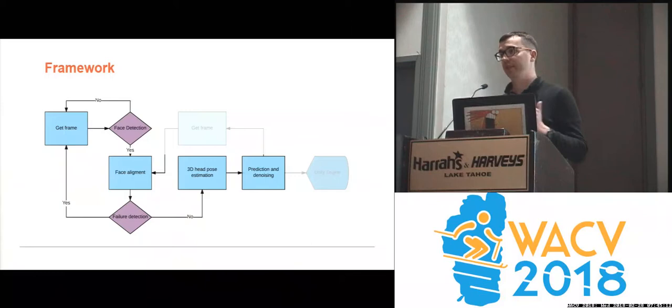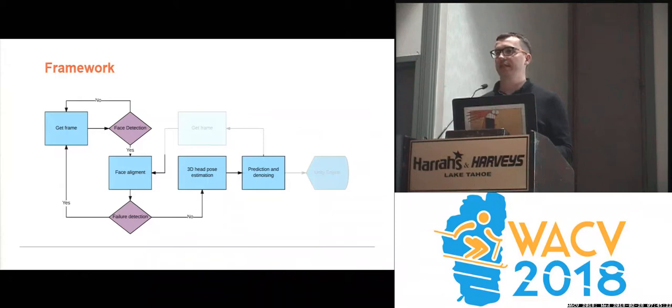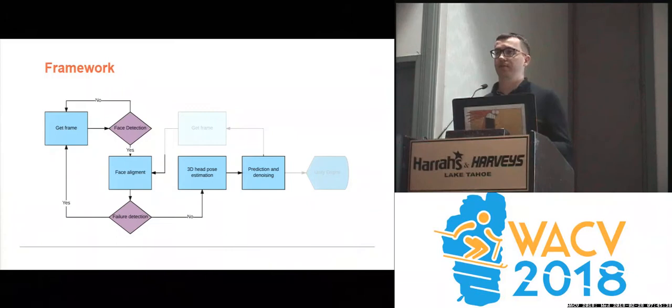The last step is prediction and denoising. Prediction is necessary here, unlike phone-based applications, because the content is not displayed on a screen but seen by the user in real time, which means any latency has to be compensated for. The bigger source of latency is actually the webcam itself, since there is a significant time between acquisition and when the image is returned to the API. The denoising step is necessary since face alignment generates a certain jitter — the noise translates to noise in head pose and has to be filtered out.